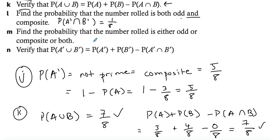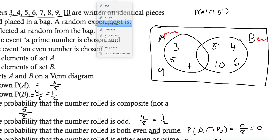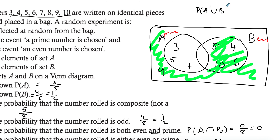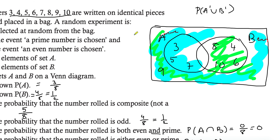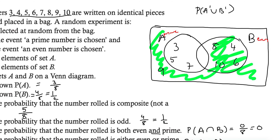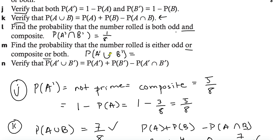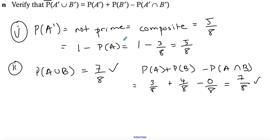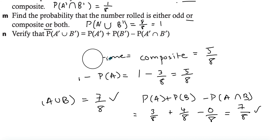For part M, the probability that the number rolled is either odd or composite or both. Odd is B prime and composite is A prime, and because we're using 'or' we use the union — A prime union B prime. Using the highlighting, A prime covers everything outside A and B prime covers everything outside B. With the union we include everything we've highlighted, which turns out to be all the numbers — eight over eight, which equals one.